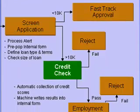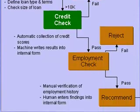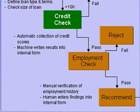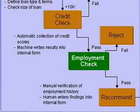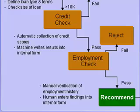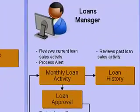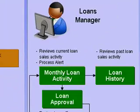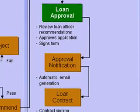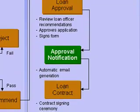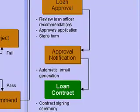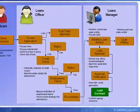This involves an automated credit check performed using a third-party service, followed by a manual verification of employment by the loan officer. The loan officer then uses the results of the background checks to make a recommendation for approval. The loan application is then routed to a loan manager, who is able to make an educated decision to approve or deny the loan. The applicant is then notified of the bank's decision and, if approved, given instructions on how to complete a loan contract.